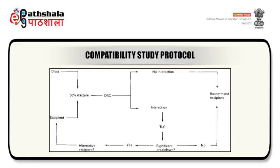A common scheme for interpreting drug excipient compatibility data: drug and excipients are taken in equal ratio and their mixture is formed. The mixture is then subjected to DSC analysis. If DSC results show no interaction, the excipient is recommended. But in case of interaction, TLC studies are further carried out. The appearance of a new peak in TLC shows significant breakdown. If no significant breakdown in TLC is observed, then the excipient is recommended. If there is significant breakdown during TLC analysis, it is suggested to use an alternative excipient and the trials are repeated in the same manner.